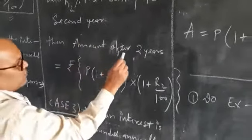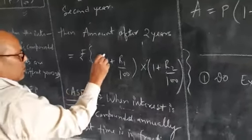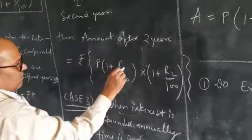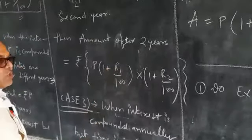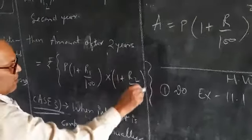Then amount after 2 years equals P, in bracket 1 plus R1 upon 100, bracket close, times in another bracket 1 plus R2 upon 100, bracket close.